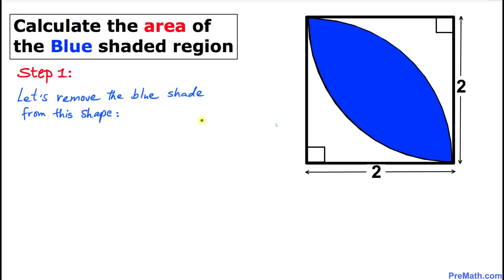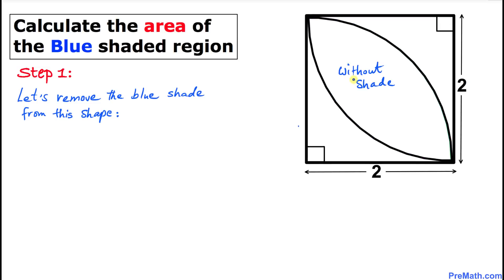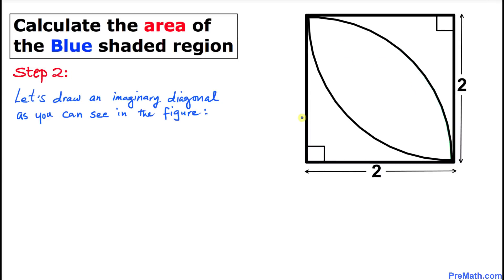As a first step to make things simple, let's go ahead and remove the blue shade from the shape. Here is our new figure without the blue shade, and now we are going to perform a few steps to calculate the area of this shape.